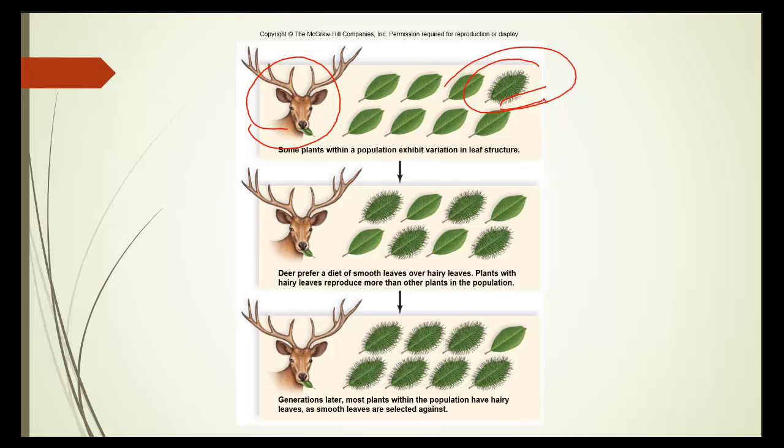Deer prefer diet of smooth leaves over the hairy leaves. The plants with the hairy leaves reproduce more than those with the smooth surrounding. As a result, the ones with the hairy leaves reproduce more and more, and they're more evident in the population. Generations later, most plants with the population have hairy leaves, as the smooth leaves are selected against.